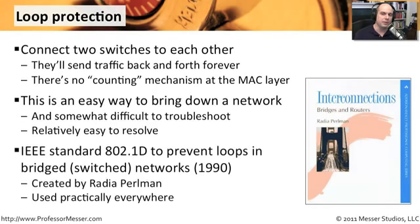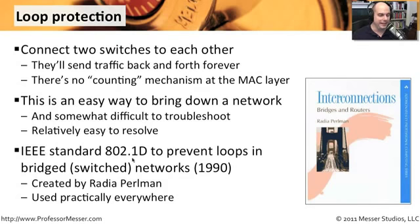Fortunately, we've built mechanisms and protocols within things like our switches and bridges to prevent these things from happening. These MAC layer protocols themselves have no way to know if they're in the middle of a loop, so we've put the intelligence on the switch or on the bridge. We use a standard called IEEE 802.1D — something called spanning tree — that prevents loops.